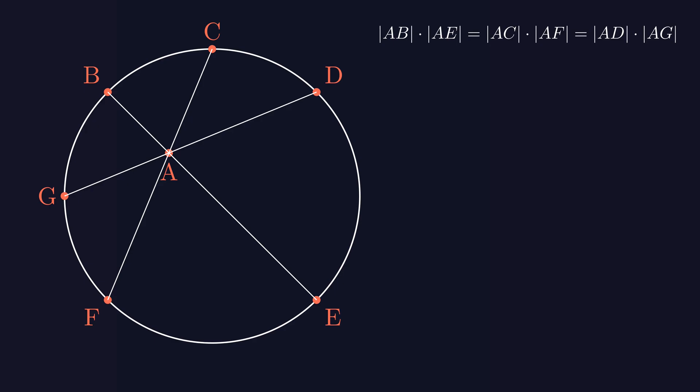This has a really elegant proof. First, to simplify things, let's remove the line GD. Then, connect points B to F and C to E. If I call the angle BFC as X, this is an exterior angle that sees the arc BC. So, angle BEC, which sees the same arc, must also be X.